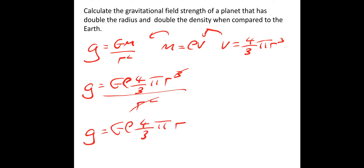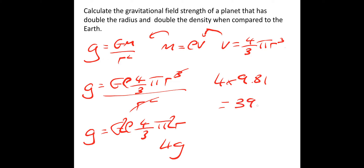Using that equation, we can answer the question. Compared to Earth, we've got double the density and double the radius, so 2 times 2 equals 4, giving us 4g. The answer is 4 times 9.81 surface gravity on Earth, which gives 39.24 metres per second squared.